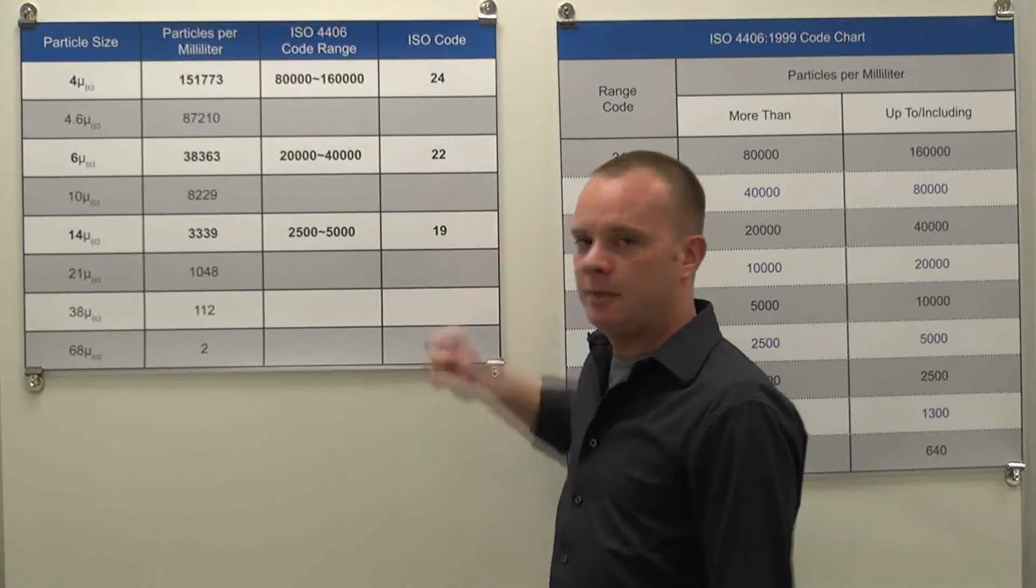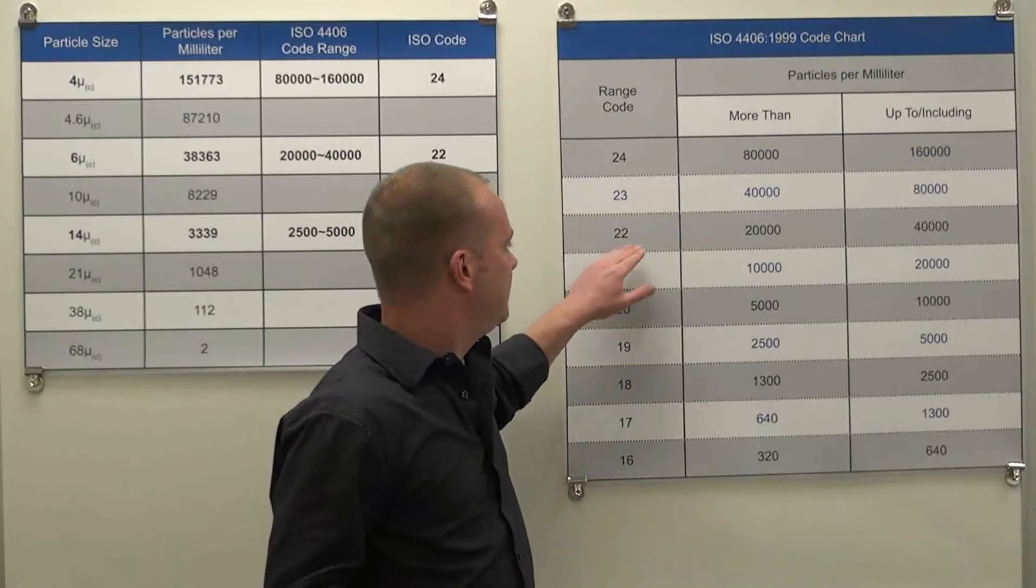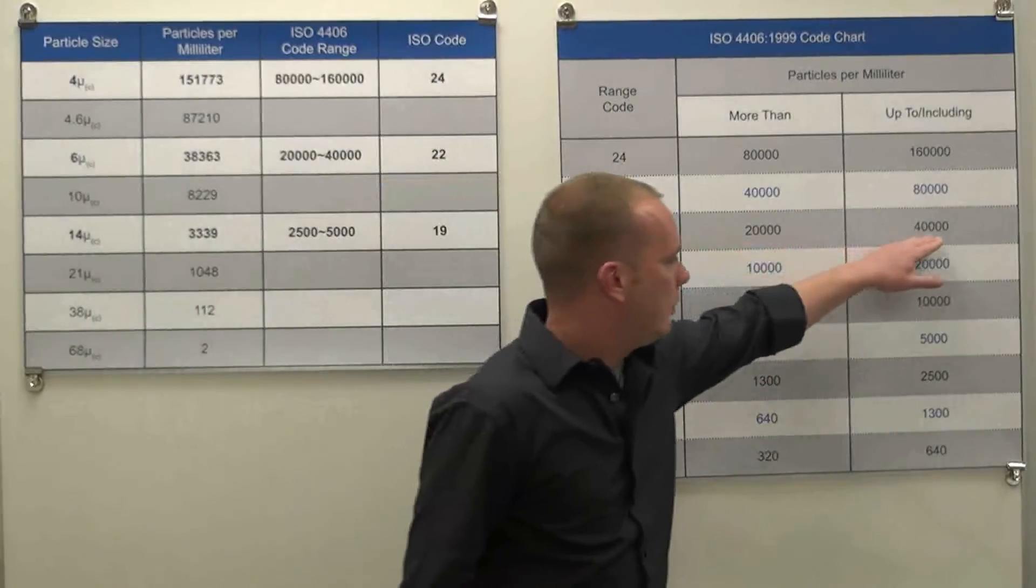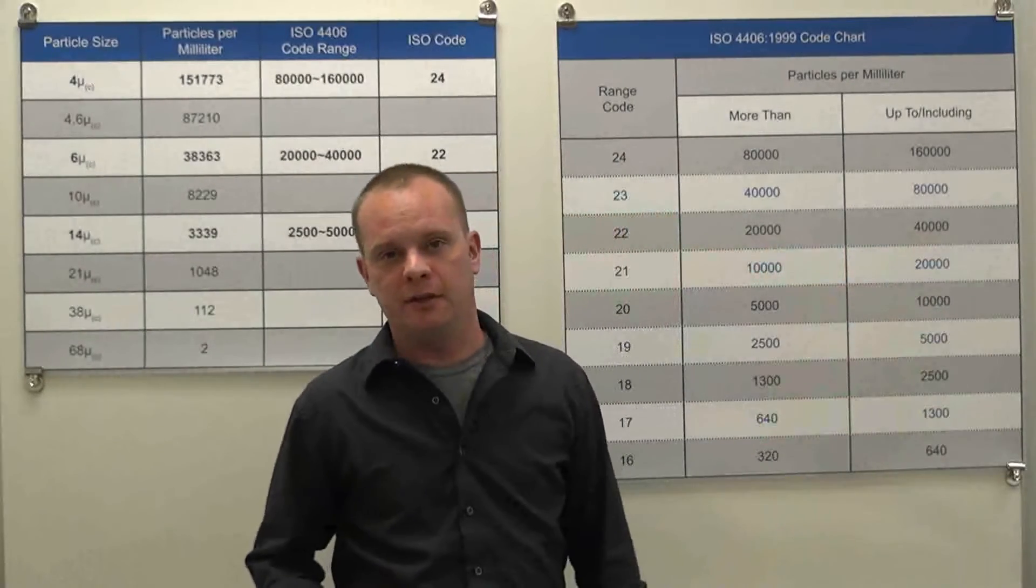Our second number, 22, shows us that we have between 20,000 and 40,000 particles per milliliter that are 6 micron in size and larger.